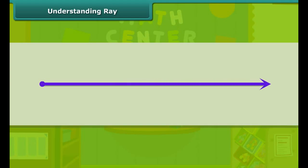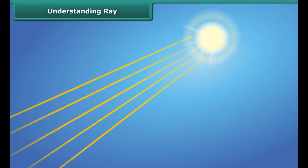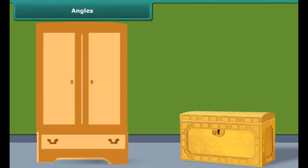We have learnt about a line segment. What if we keep one end point fixed and extends the other? Do we have any name for such figures? Yes, it is called a ray. You can consider this as sun rays.